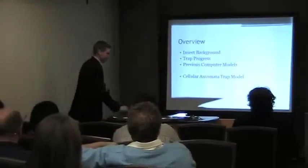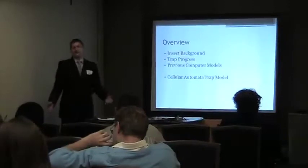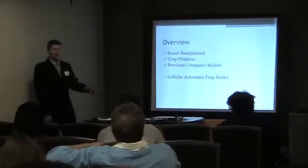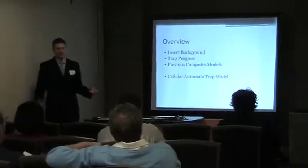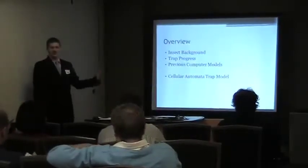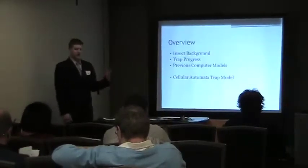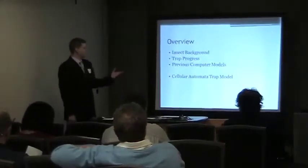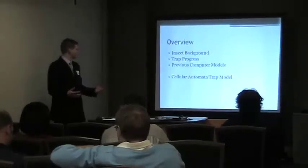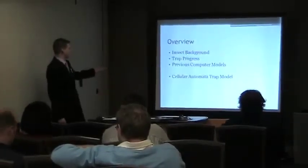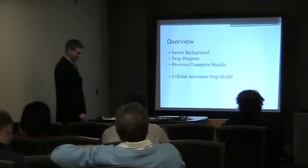To start, I'll take a look at the background of the insect, the emerald ash borer — what that is and how it's been affecting trees in the population. Then I'll look at track progress and efforts made to track the insect, previous computer models used to model this process, and the cellular automata style track model that I created for this presentation.